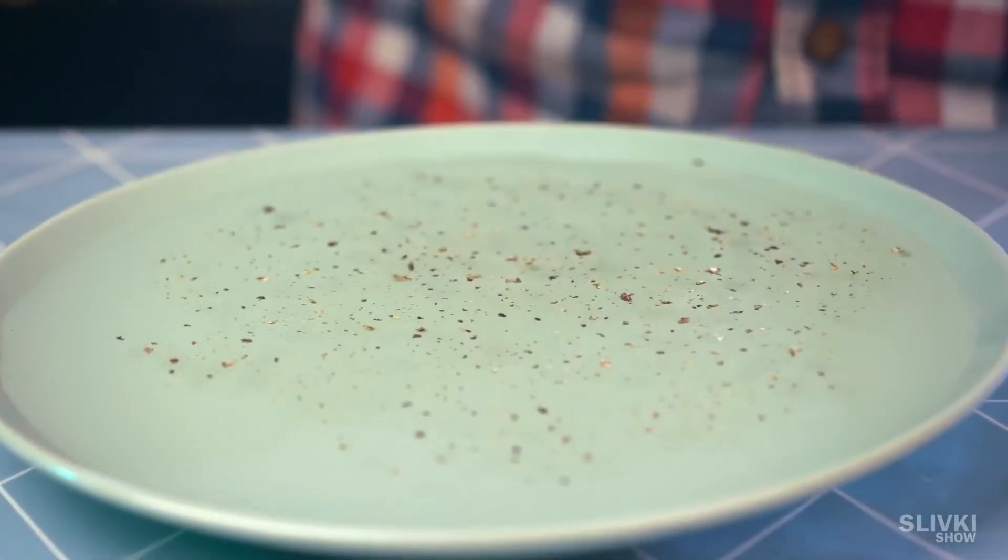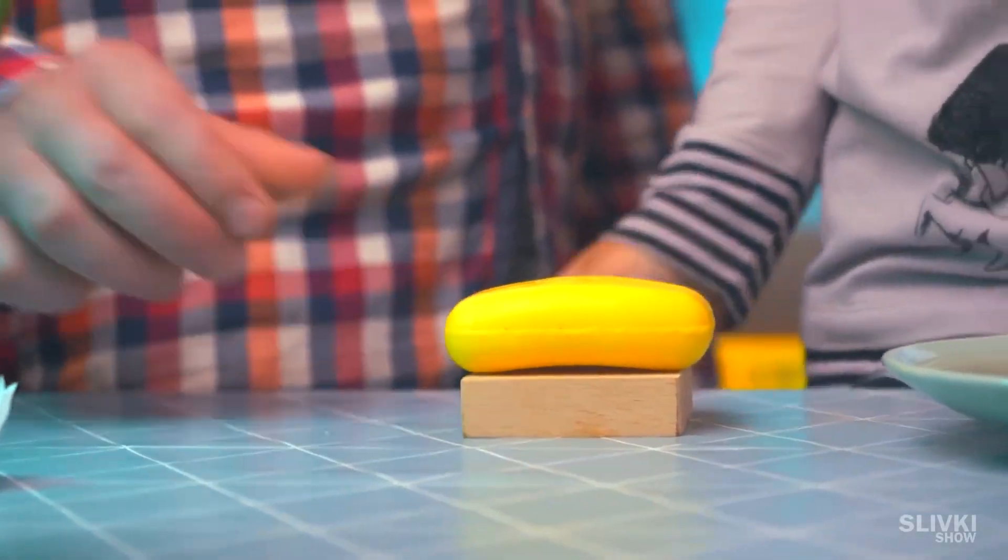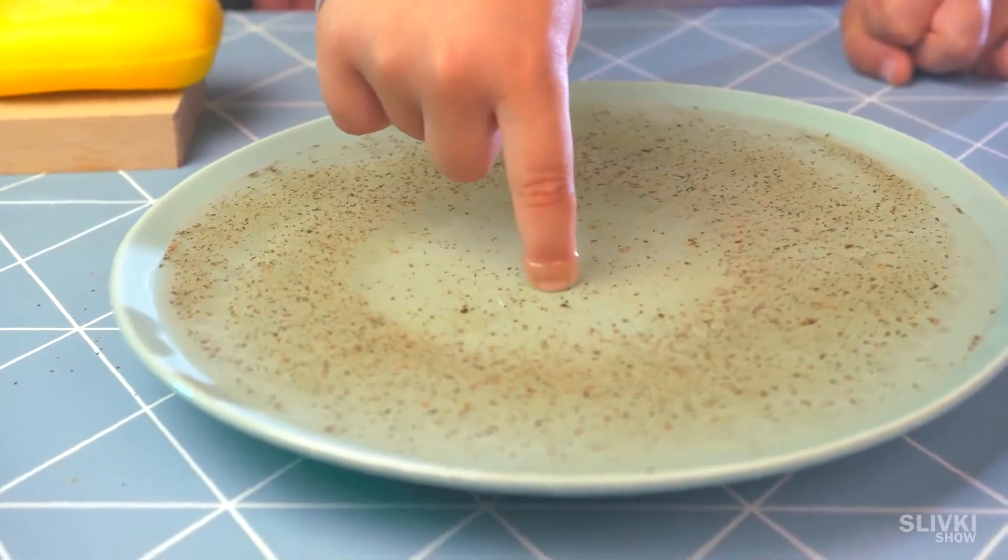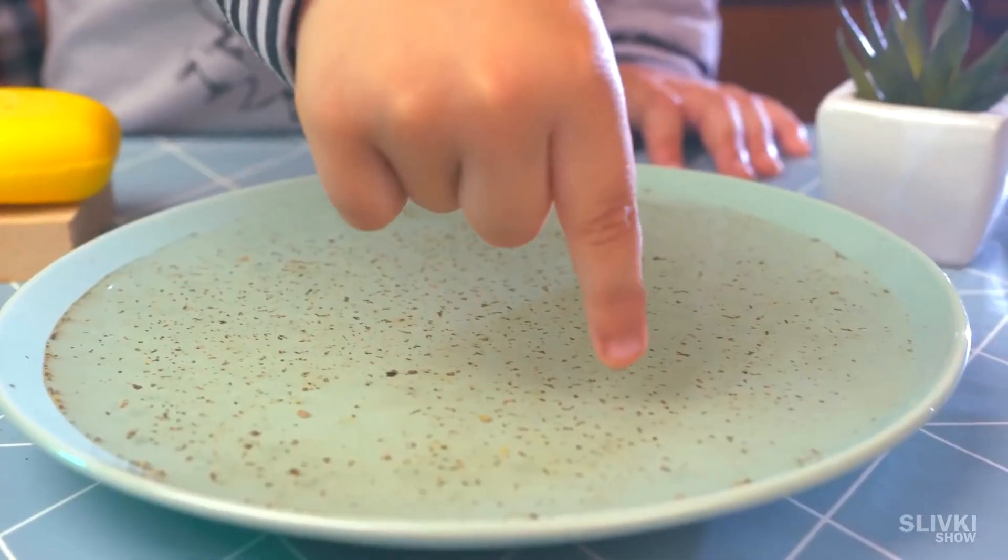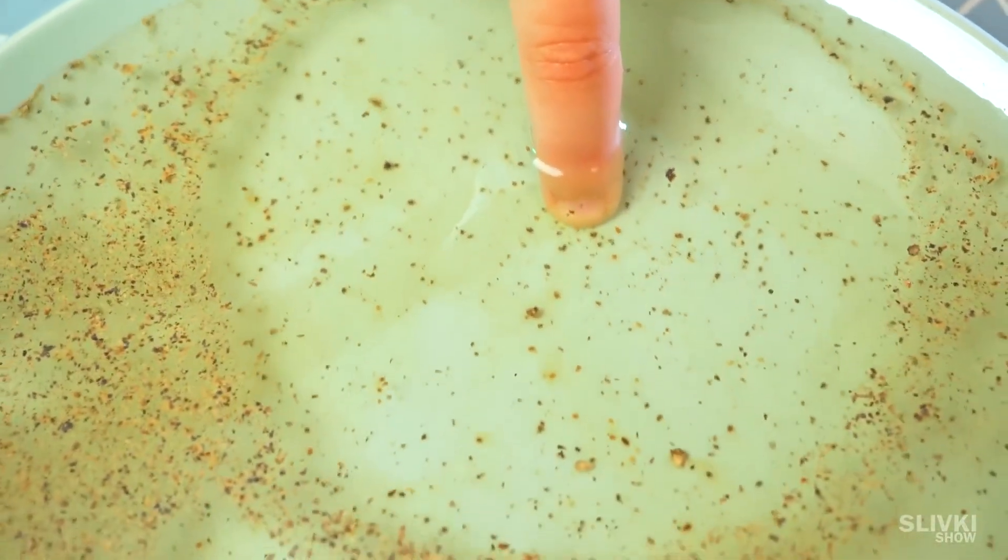Tell a kid that pepper is dirt and bacteria, and ask them to put their finger there. Dirt sticks to the finger and it's bad. Now ask them to soap it with water and repeat the experiment. Like we see, all dangerous bacteria and viruses are afraid of soap and leave right away.